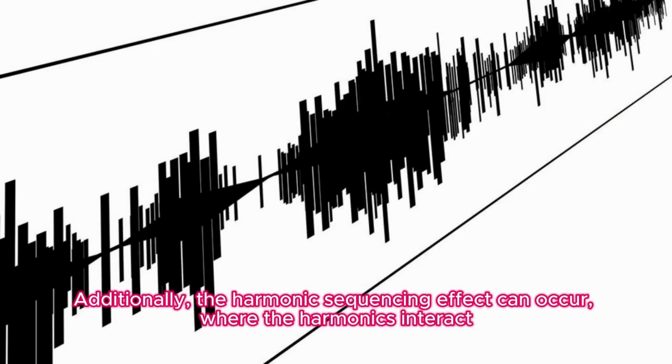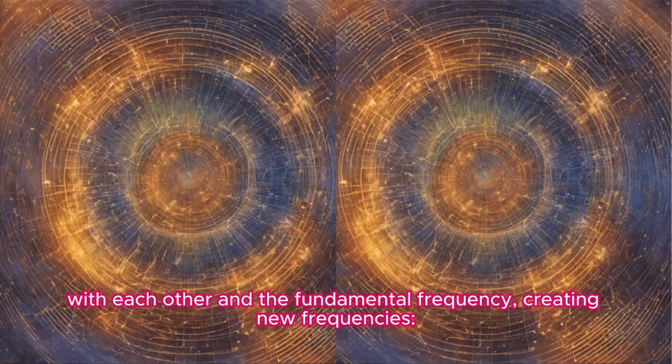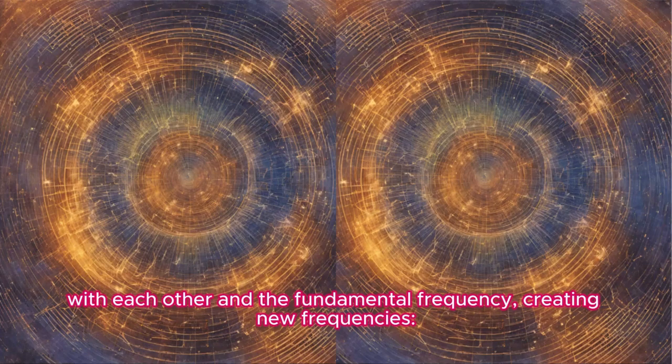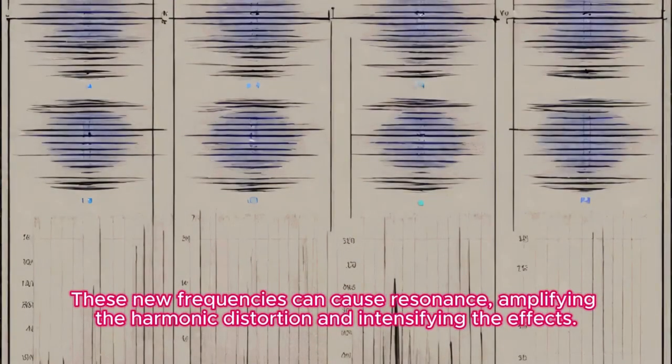Additionally, the harmonic sequencing effect can occur where the harmonics interact with each other and the fundamental frequency, creating new frequencies f_new = f·(h1 ± h2). These new frequencies can cause resonance, amplifying the harmonic distortion and intensifying the effects.